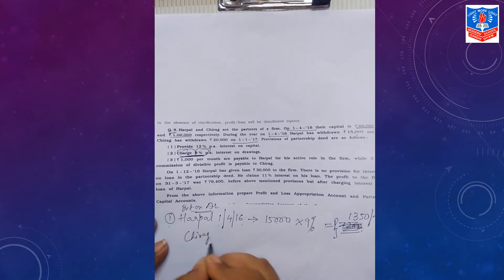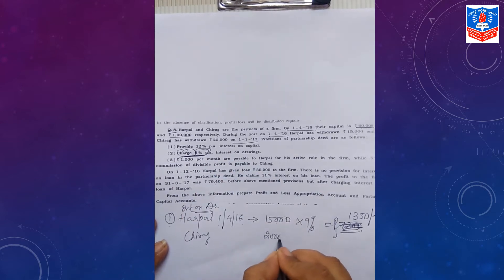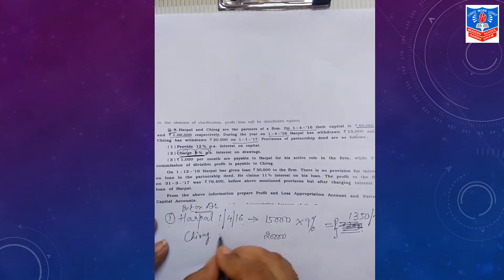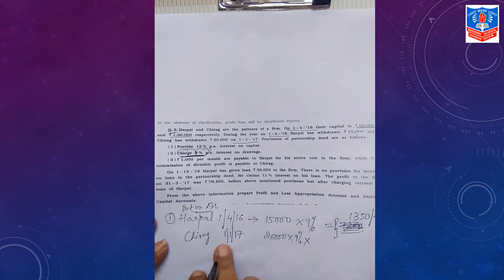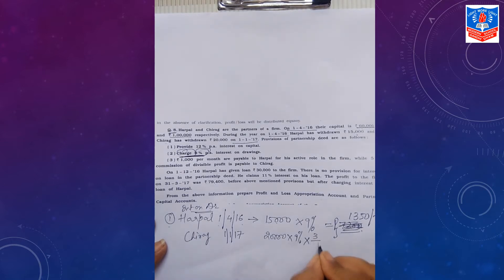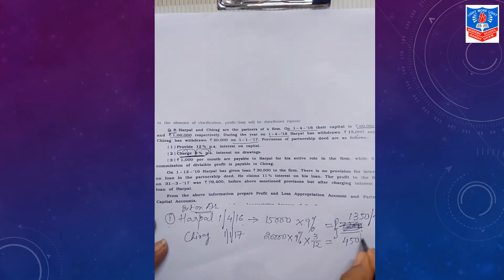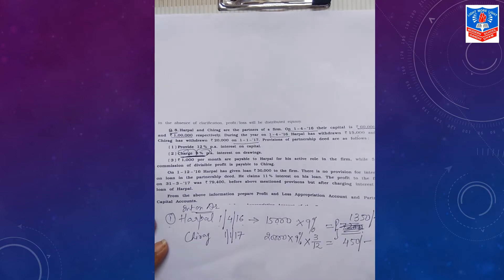Same manner, we will calculate interest on drawing for Chirag. Chirag has withdrawn Rs. 20,000 but date of withdrawing is 1st January 2017. So 9% interest but for how many months? January, February, March. That comes to only 3 months. So interest on drawing for Chirag comes to Rs. 450.